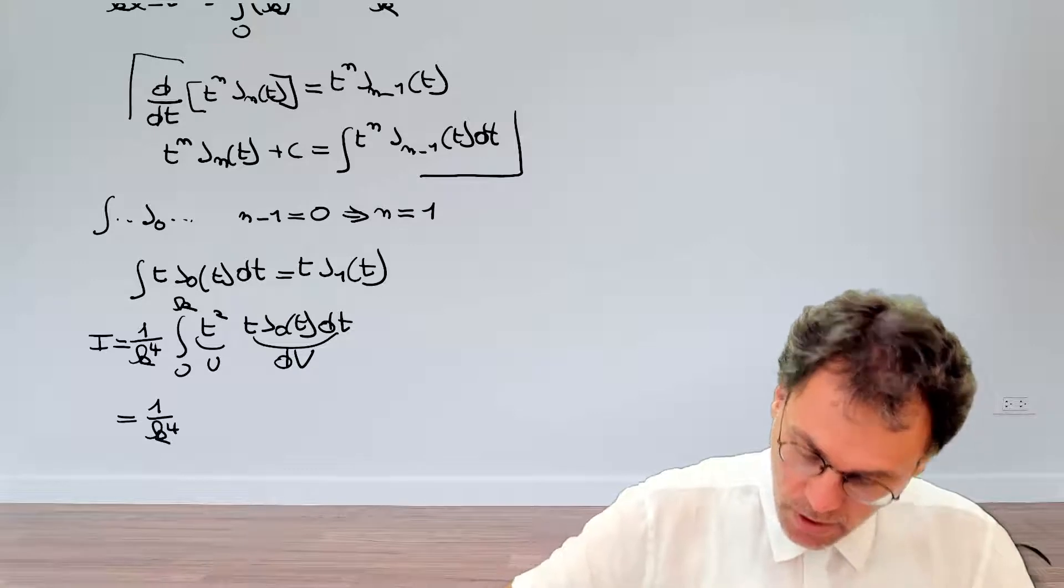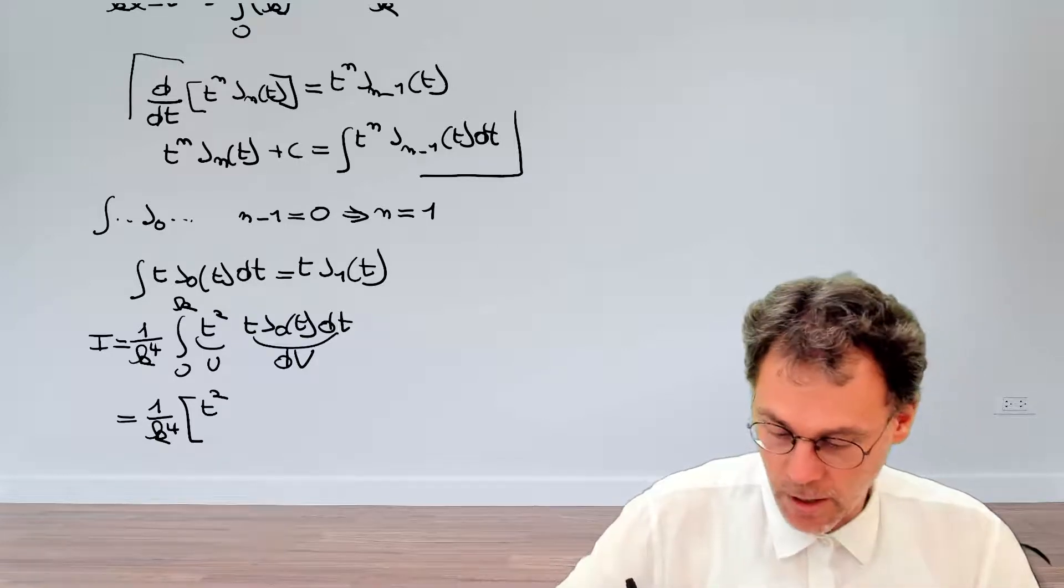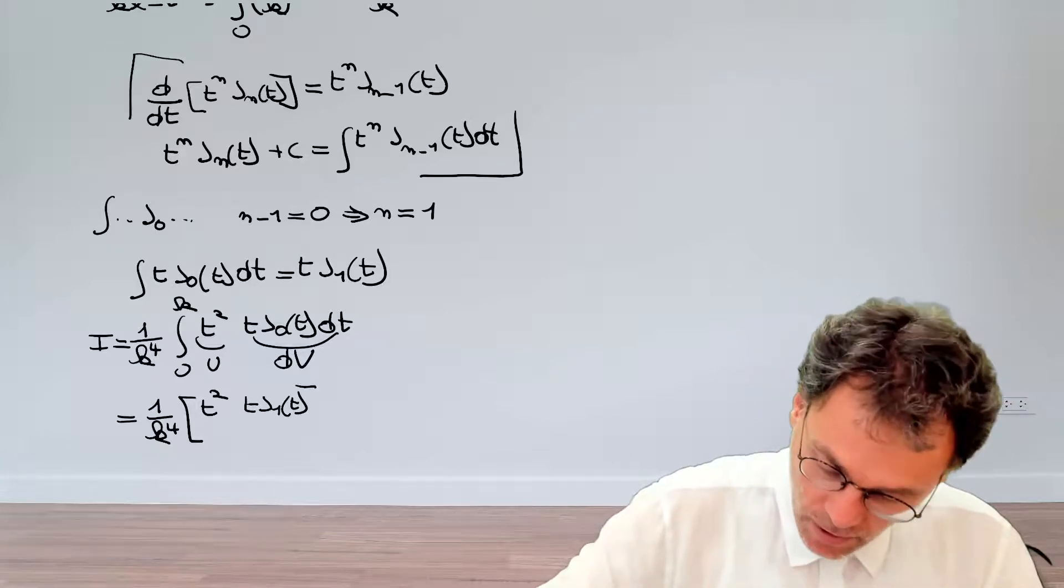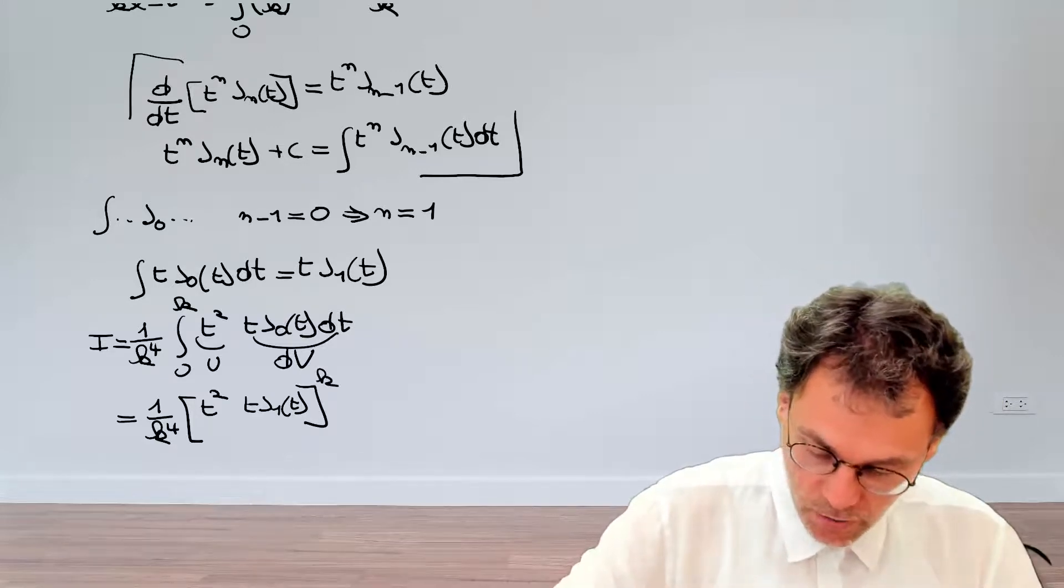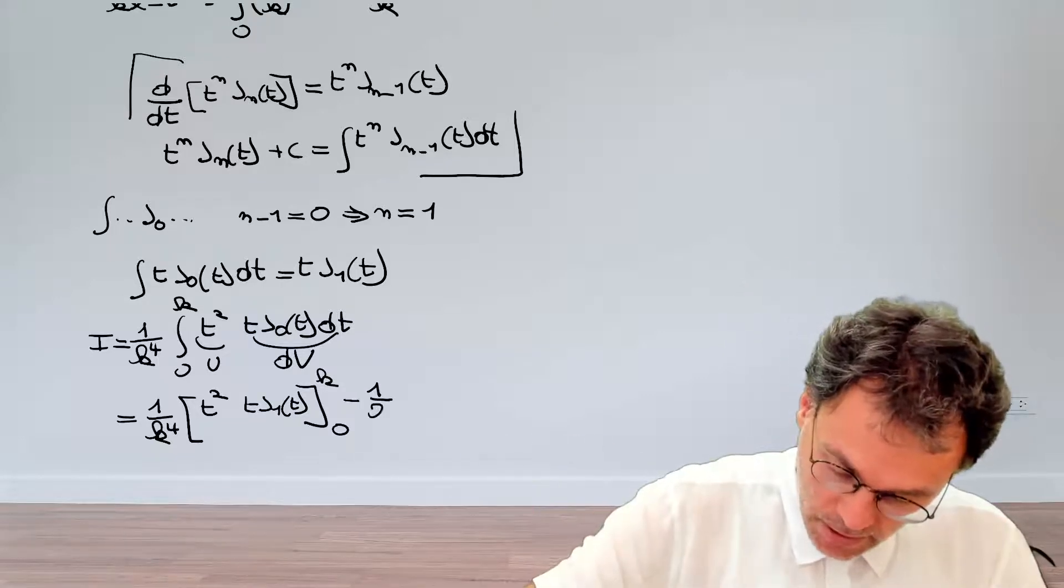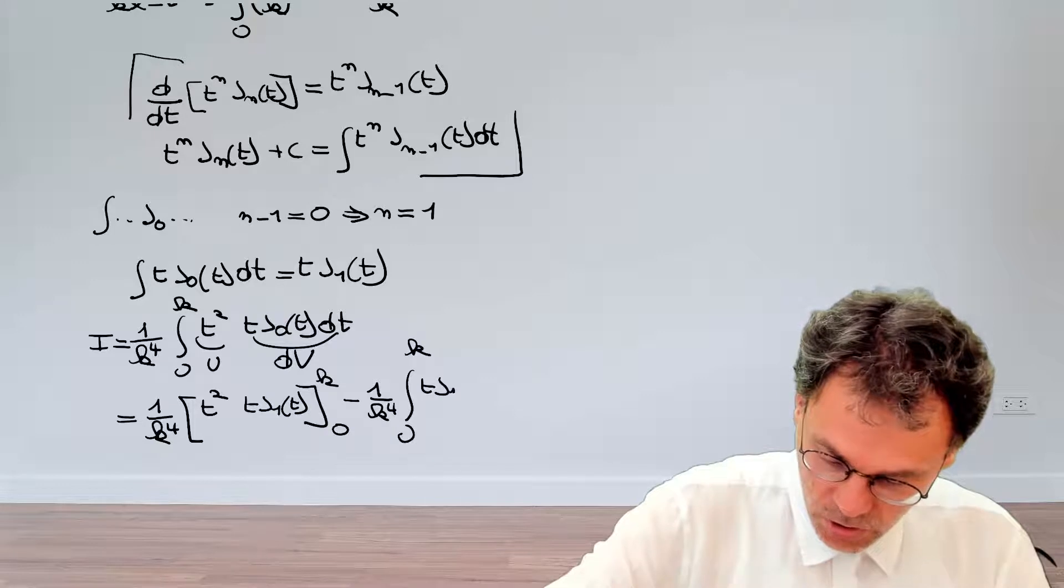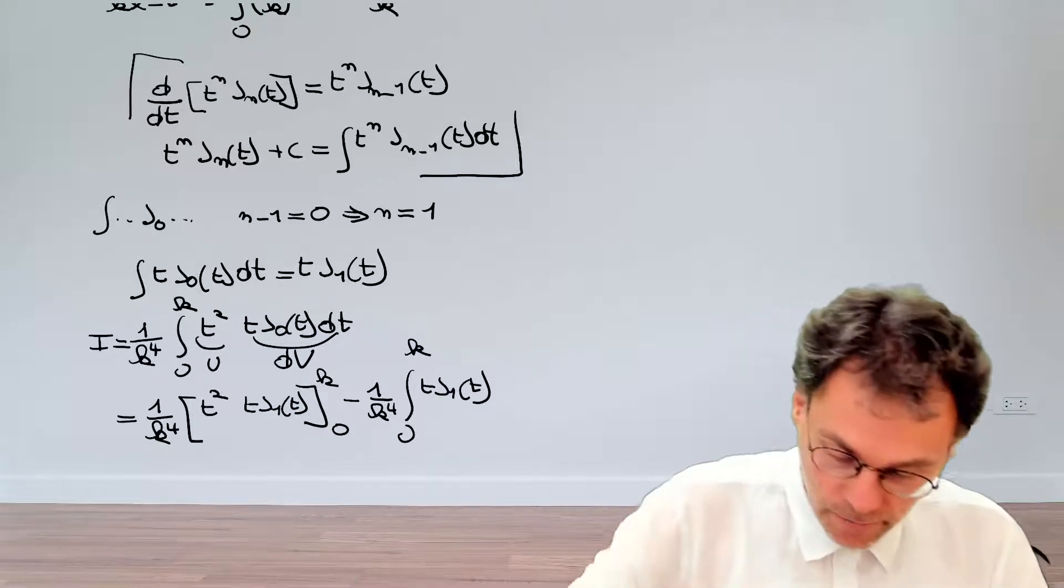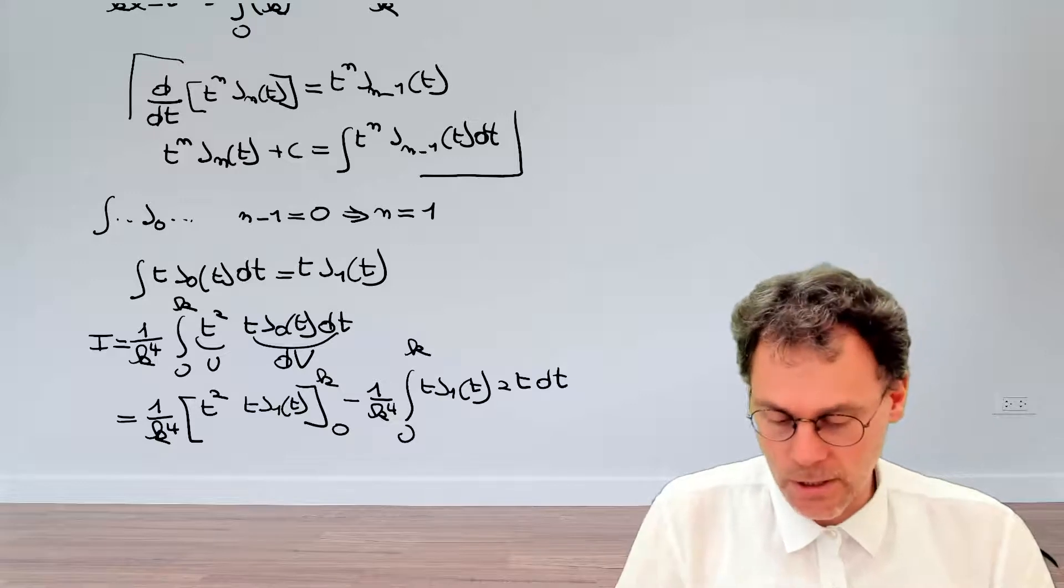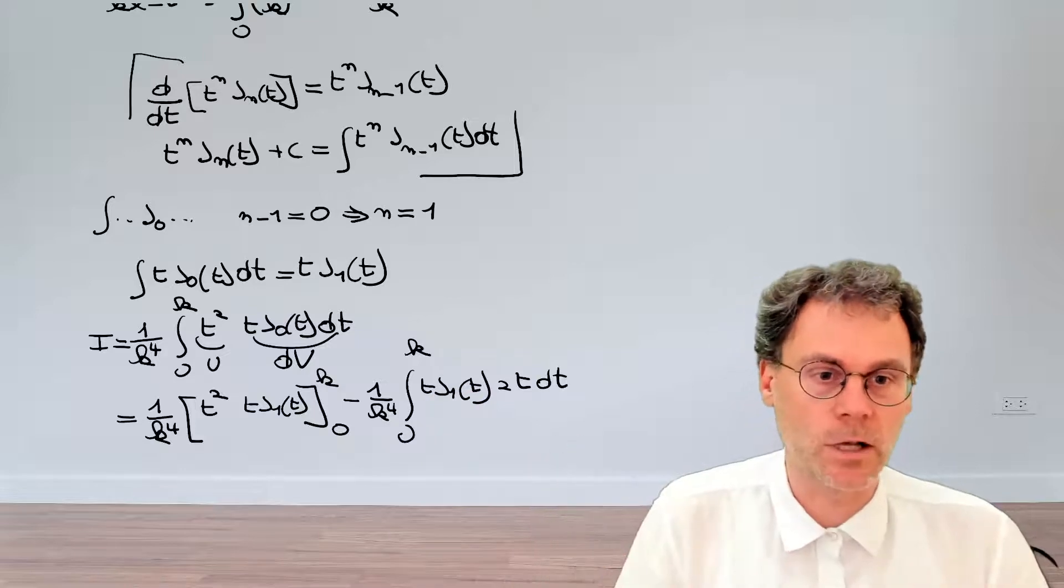Bringing us to 1 over k^4. And then we have uv: u being t^2, v being t J_1(t), evaluating the whole thing between the boundaries k and 0. So that's uv minus the integral of v du. So for v, again, we have t J_1(t). And then du, that's a very easy derivative to take. So that's 2t dt.